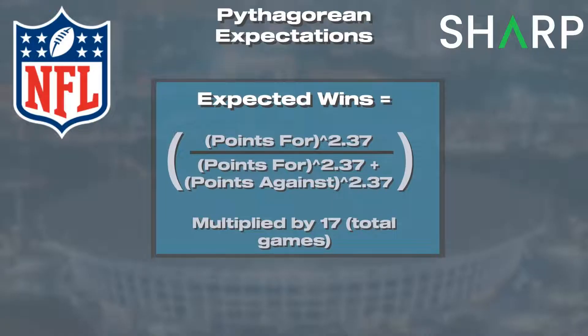Bill James first came up with the Pythagorean expectation for baseball. It was a way to figure out what the expected wins would be of a team that scored X amount of runs and gave up X amount of runs, and it proved to be quite beneficial. Since that time, the formula has been adjusted to accommodate a variety of sports, the NFL being one of them. The formula for the NFL looks like this: points for to the 2.37 power divided by points for to the 2.37 power plus points against to the 2.37 power. You take that number, multiply it by the number of games — now at 17 games in the NFL schedule — and that gives you your expected win total based on points for and points against.